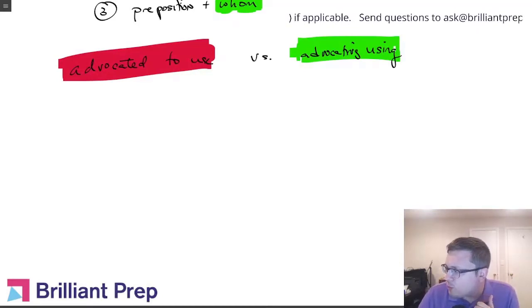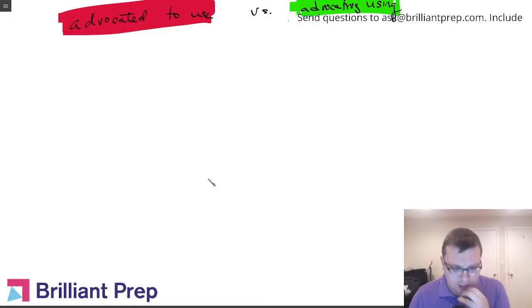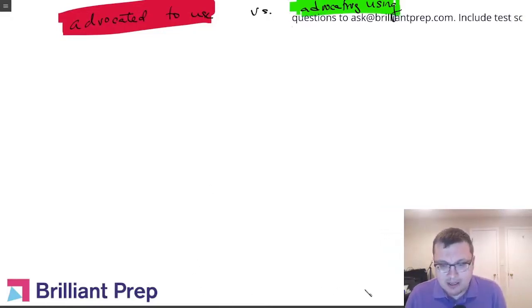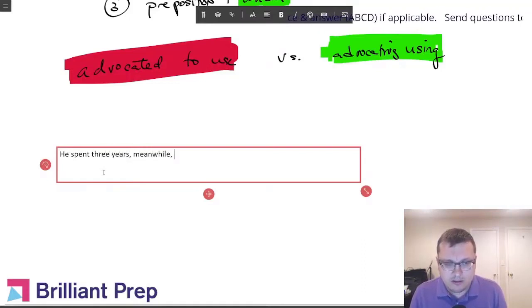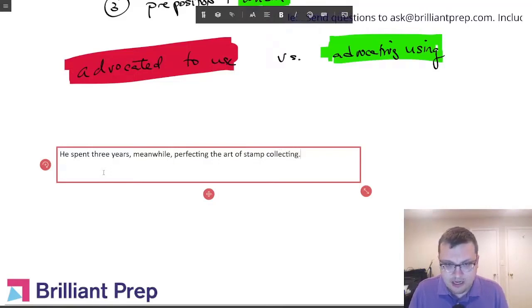Is a comma before and after meanwhile ever allowed? Sure, it depends on the sentence, of course it depends on the context. But here's a sentence that could do the job. Usually it's going to be something that's in the middle of the sentence, so something like this: He spent three years, meanwhile, perfecting the art of stamp collecting.